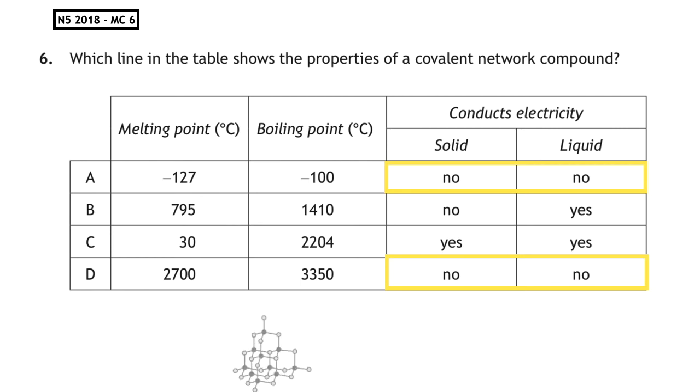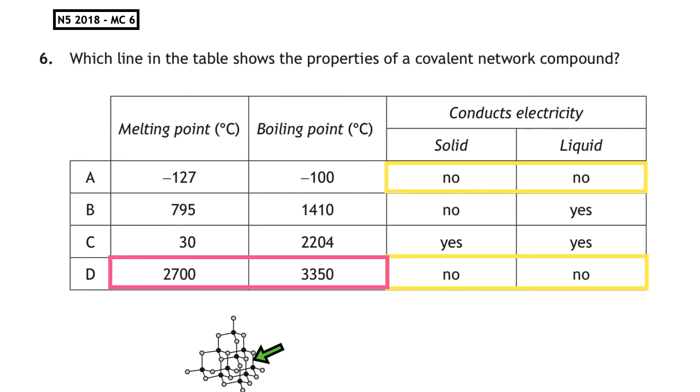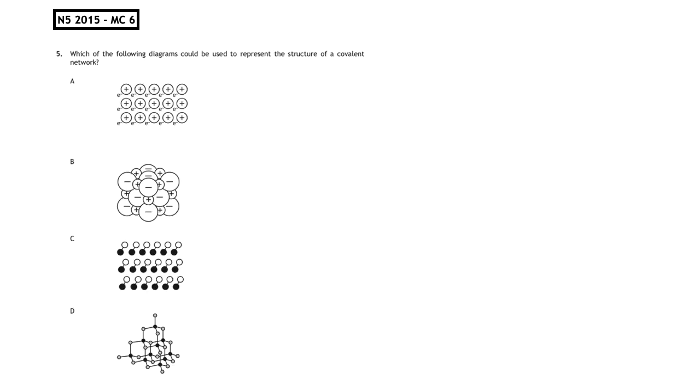A covalent network - network tells us that there are lots of atoms that are joined together. We know that these covalent bonds are extremely strong. These are the bonds that have to be broken. Because those bonds are extremely strong, the energy required to break them is greater, which tells us that covalent networks have a high melting point and boiling point. So the correct answer to this question is multiple choice answer D.